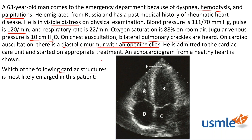Now we've read the question, and we want to look at that last sentence again: which of the following cardiac structures is likely enlarged? We'll think of some answers — our choices are going to be cardiac chambers, but which one do we think it is and why? That's step five. Then for step six we uncover our answer choices. As you can see, they're presented as a diagram, so you need to be able to label the diagram yourself to answer this question.